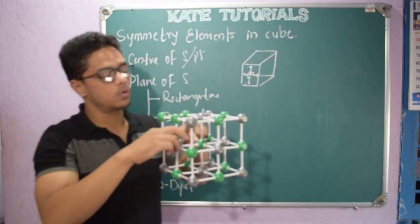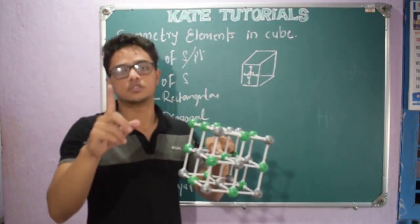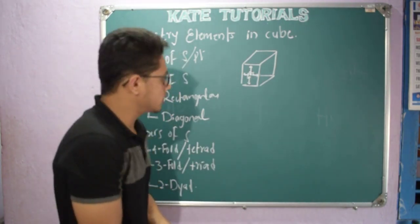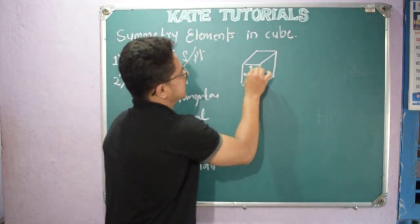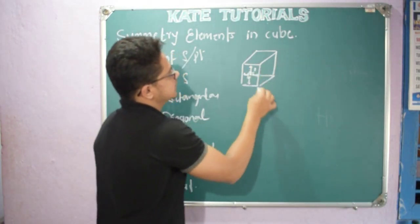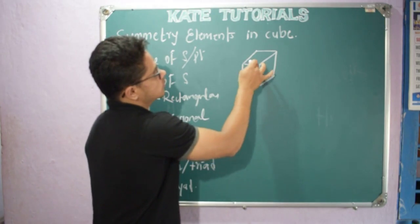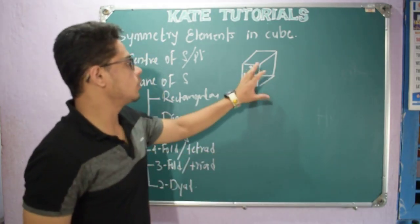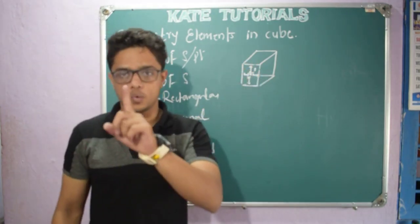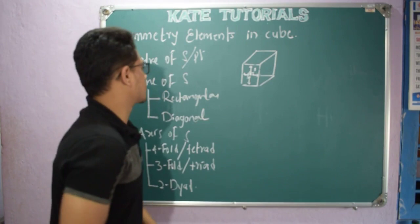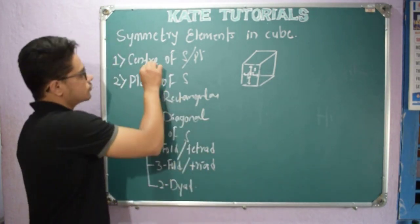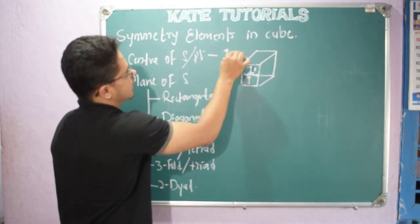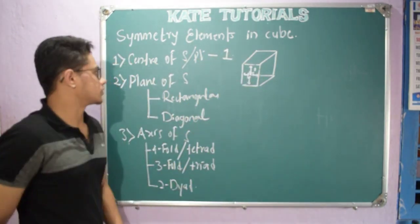In a cube, we can have only one center of symmetry. If I shift this point to any other point, all the planes are no longer equidistant. So in a cube, we can have only one center of symmetry.